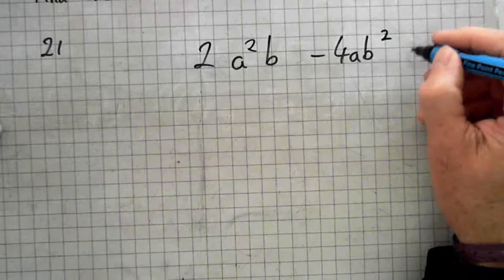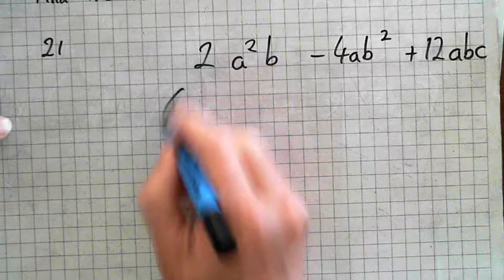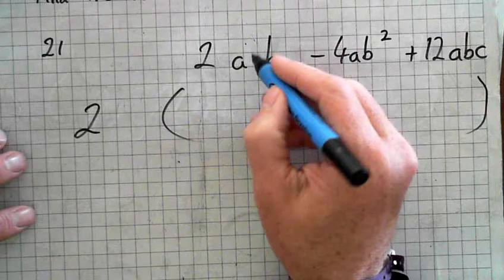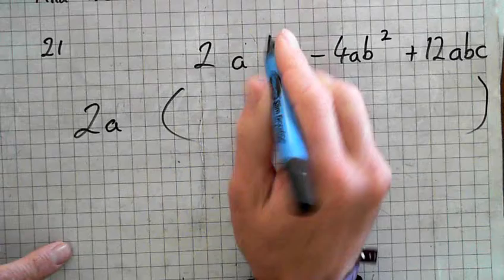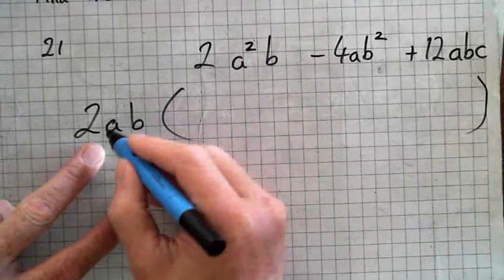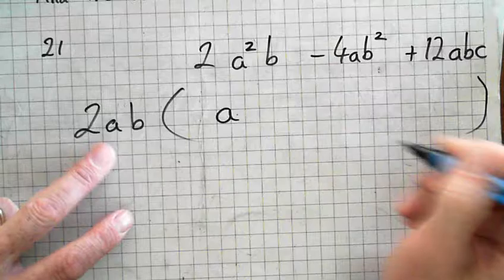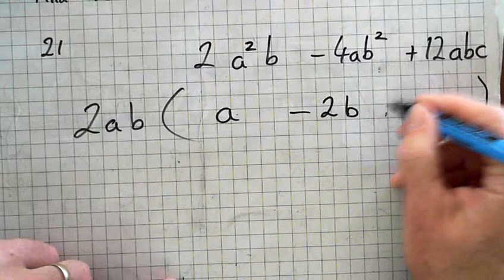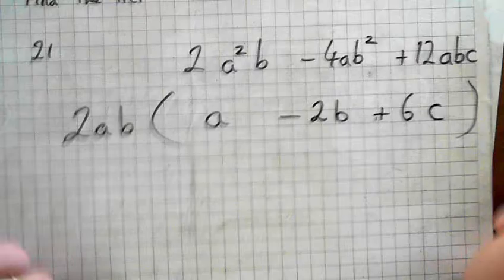And question 21. There's 3 items here. 2a squared b minus 4ab squared plus 12abc. Shh. Stop talking. It's the highest number that will divide into all 3. 2. Looking up. Alright. a squared is a times a. How many a's can I take from? 1a. I can only take 1a from all of those. What about b's? 1b. Yeah.